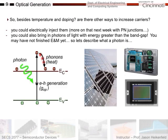Besides temperature and doping, there are other ways to increase carrier concentrations. One way is electrical injection — we'll cover that next week with p-n junctions and diodes, where carriers are electrically injected across the junction. Another way is optical generation: bringing in photons of light with energy greater than the bandgap energy. These photons can transfer energy to electrons in the valence band, generating electron-hole pairs.